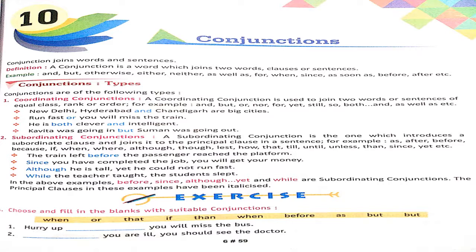And you look at the subordinate example. The train left before the passenger reached the platform. By this you have to understand that before, after, since show two activities, and without the other activity the sentence is not complete. So one principal clause is dependent.